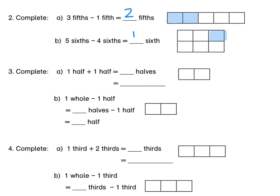For 3, 1 half plus 1 half. If we shade it here in this whole, 1 half plus another half means that we've shaded 2 halves. Do you notice that we've shaded the whole block? So 2 halves is equal to 1 whole.